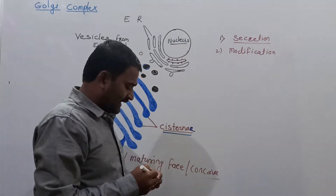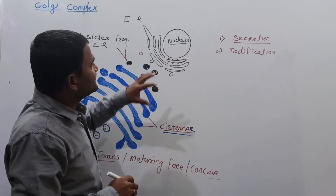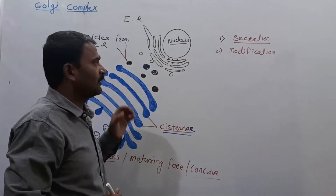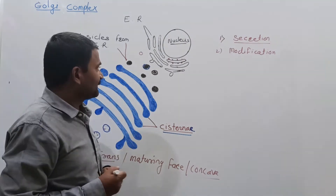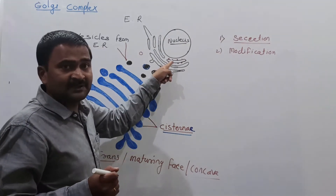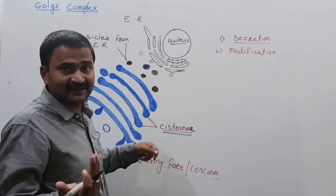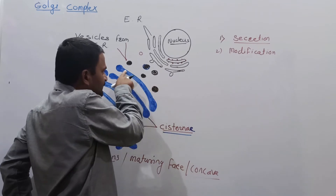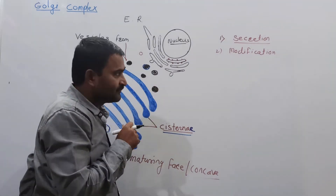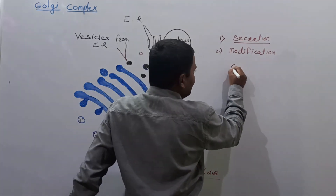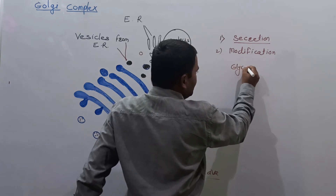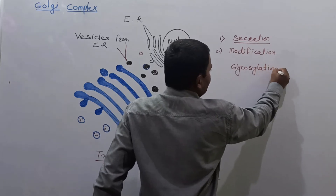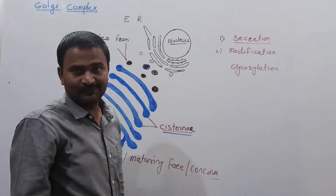The Golgi complex helps in the modification of secretory material. The process by which proteins and lipids from the endoplasmic reticulum are modified is known as glycosylation.